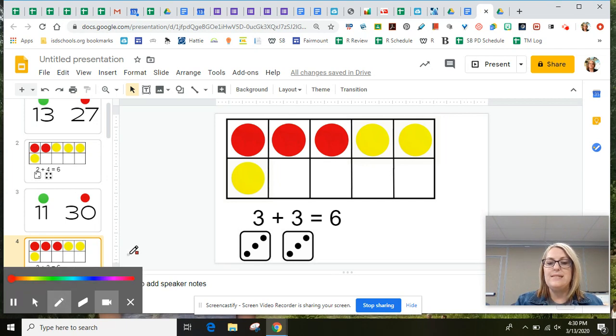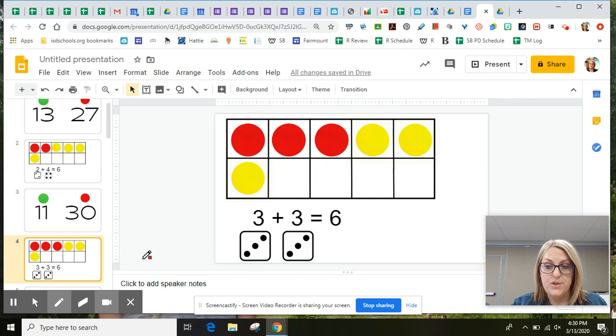Three and three is the same as six. Now, when you're going to do an addition problem, remember, you can count each dot to help your thinking. One, two, three, four, five, six. Three and three is the same as six.